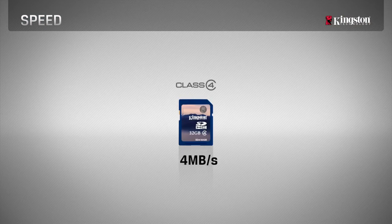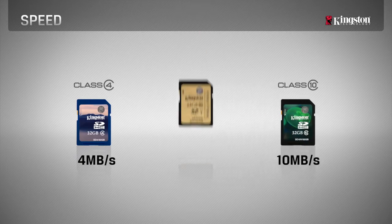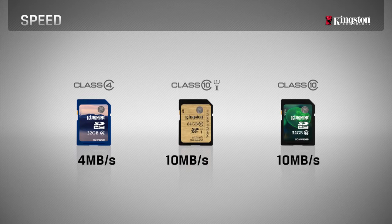Class 4 cards deliver a minimum speed of 4 megabytes per second, while Class 10 cards deliver a minimum of 10 megabytes per second. UHS-I cards also deliver a minimum of 10 megabytes per second and are capable of recording real-time broadcasts and HD videos.